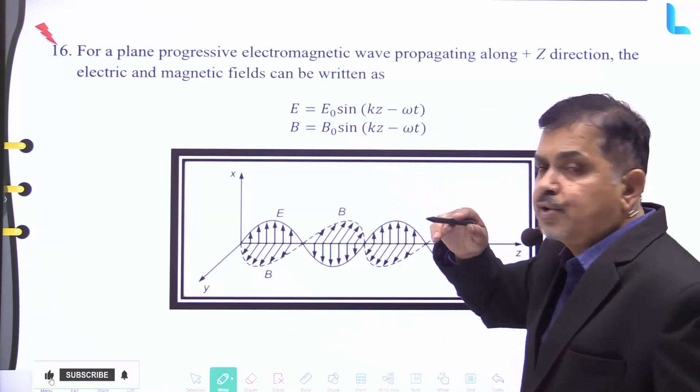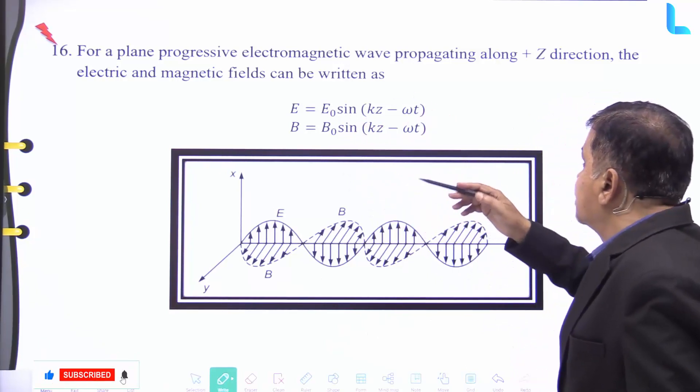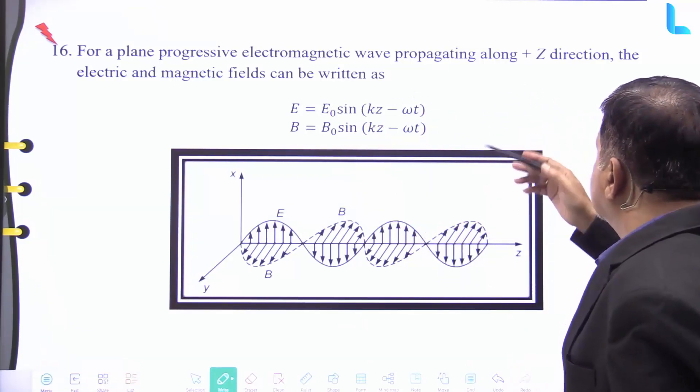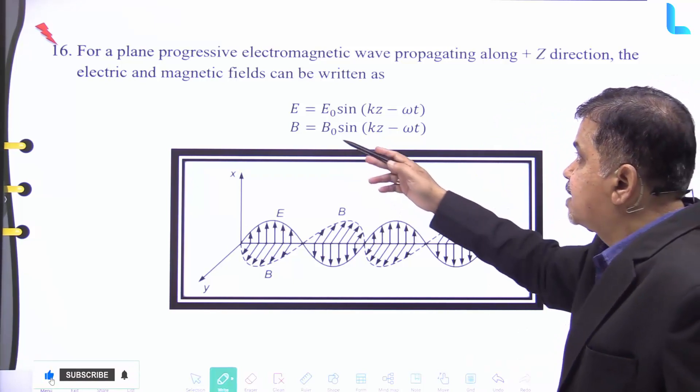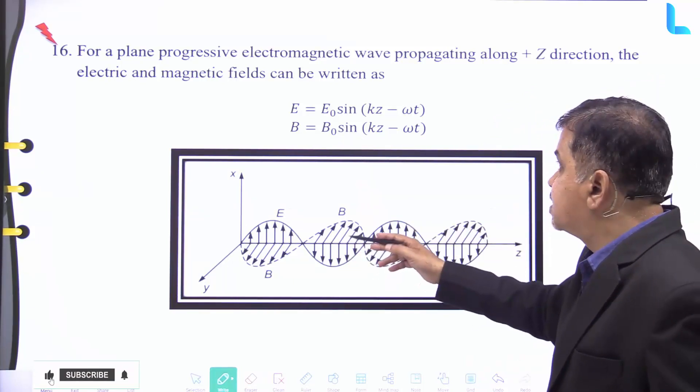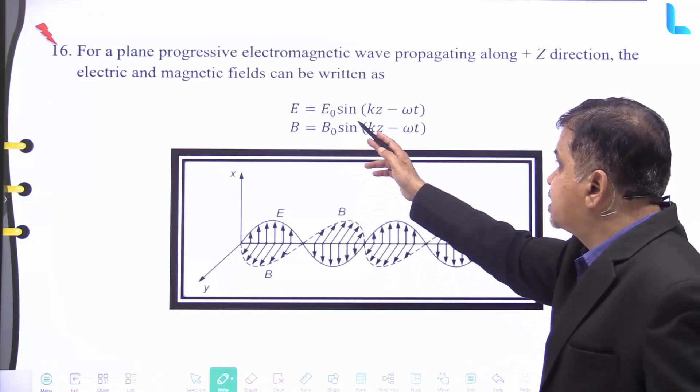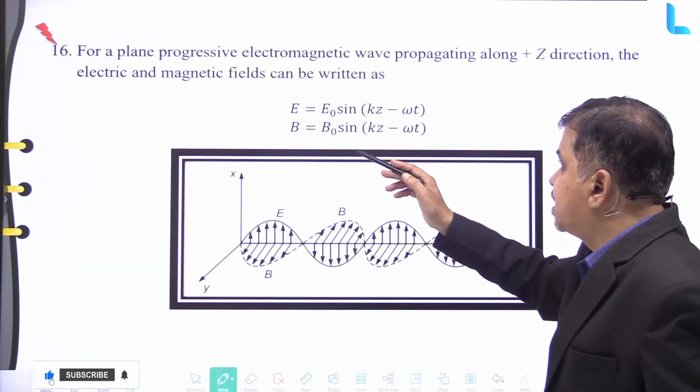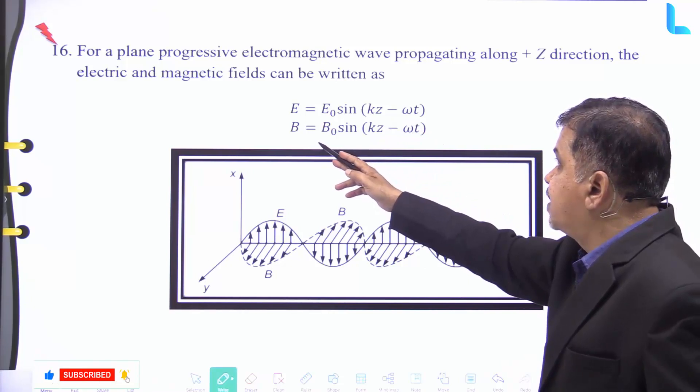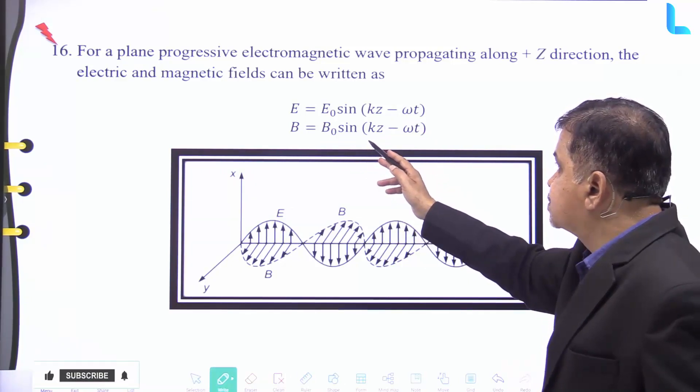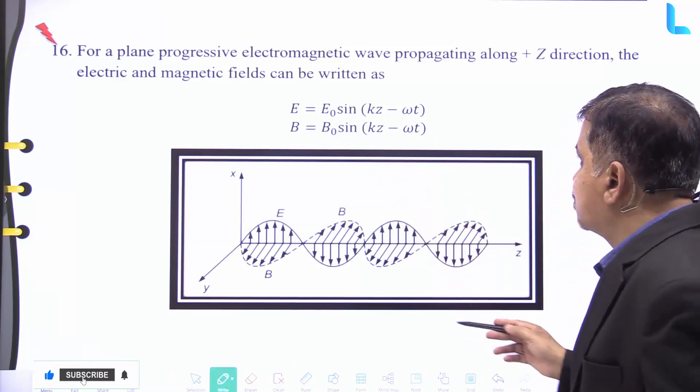Now we will see certain graphs. For a plane progressive electromagnetic wave propagating along the z plus direction, the electric and magnetic fields can be written as shown here: E equal to E₀ into sin(kz minus ωt) and the magnetic field B is given by B₀ into sin(kz minus ωt).